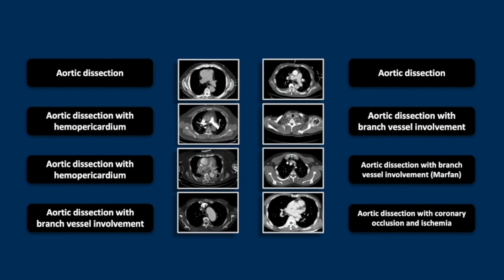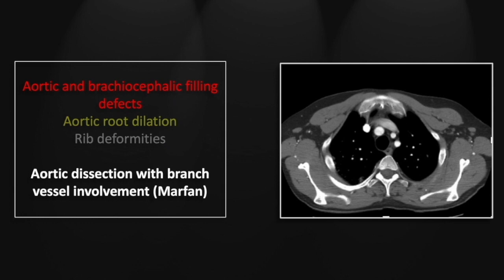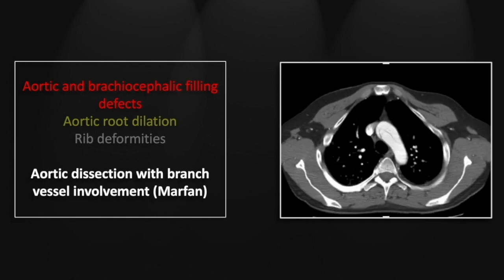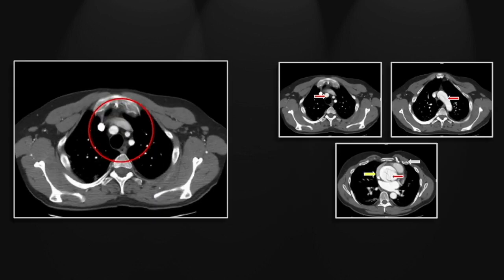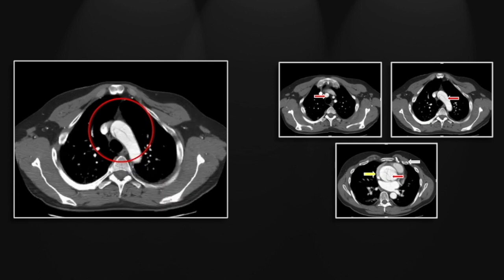Our next case is an aortic dissection with branch vessel involvement in a patient with Marfan syndrome. There is a linear filling defect at the brachiocephalic origin, and the dissection flap is visible in the anterior aspect of the aortic arch. It extends all the way down into the aortic root, which is markedly dilated in this patient. There is also an incidental rib deformity seen in Marfan patients. Marfan patients have an increased incidence of aortic dissections.